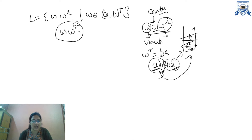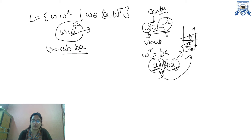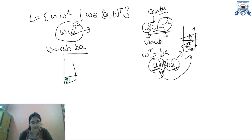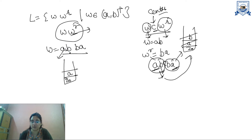But in the language ww^r, there is no center element. For example, if w equals 'ab' then w^r equals 'ba', so the full string is 'abba'. Here we do not know when to switch from pushing to popping, because there is no center marker. If I apply the same strategy — popping when input symbol and top of stack are the same — symbols being different means I just push.